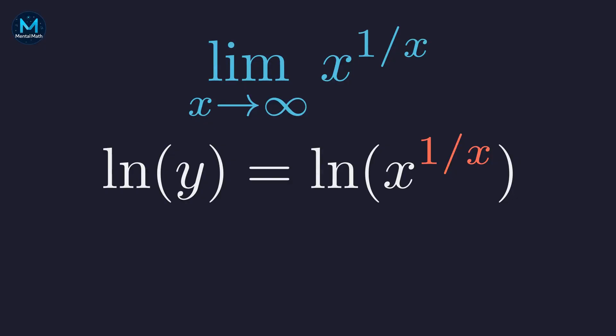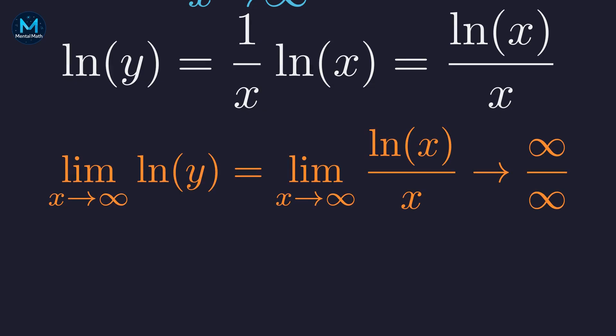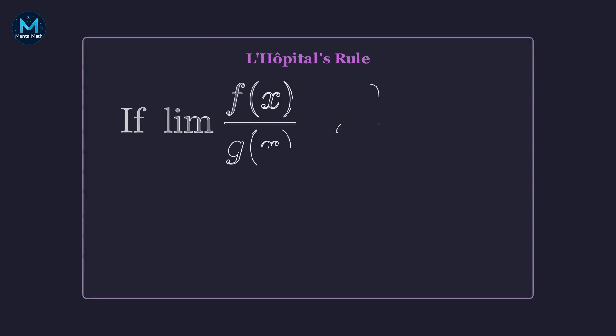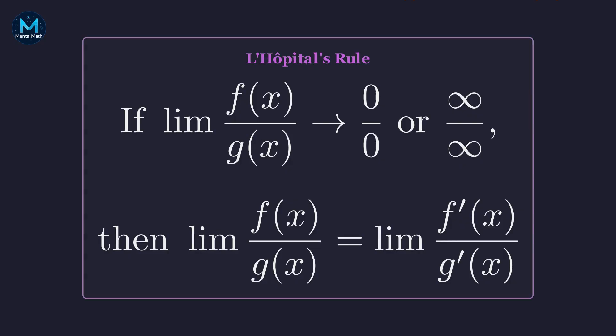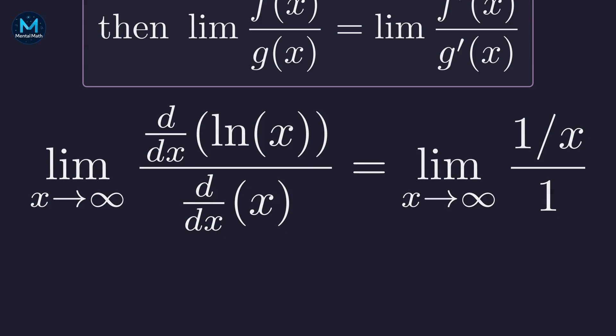Using the power rule, we bring the exponent down, giving us: the natural log of y equals the natural log of x all divided by x. As x approaches infinity, we get an infinity-over-infinity indeterminate form — exactly the situation where L'Hôpital's rule shines. L'Hôpital's rule tells us we can take the derivative of the top and bottom separately, then evaluate the limit. The derivative of the natural log of x is 1/x, and the derivative of x is just 1.